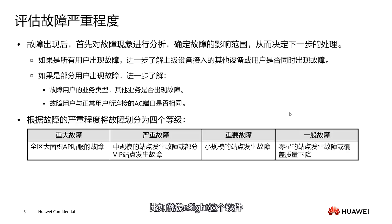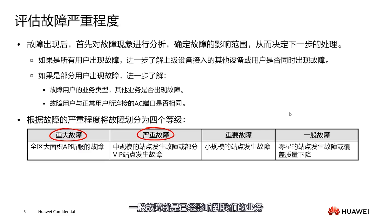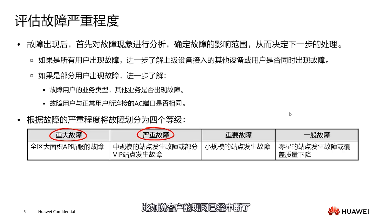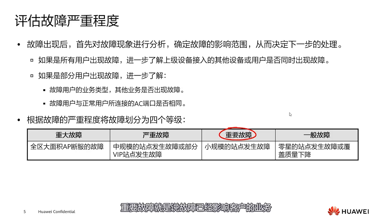For instance, software like eSight also categorizes faults as severe or urgent. Red means urgent faults, which typically means something is seriously impacting our obligations and requires immediate resolution, such as a client's network being down. This is what we call an urgent fault that needs immediate resolution. The second type is important faults, referred to in English as minor.